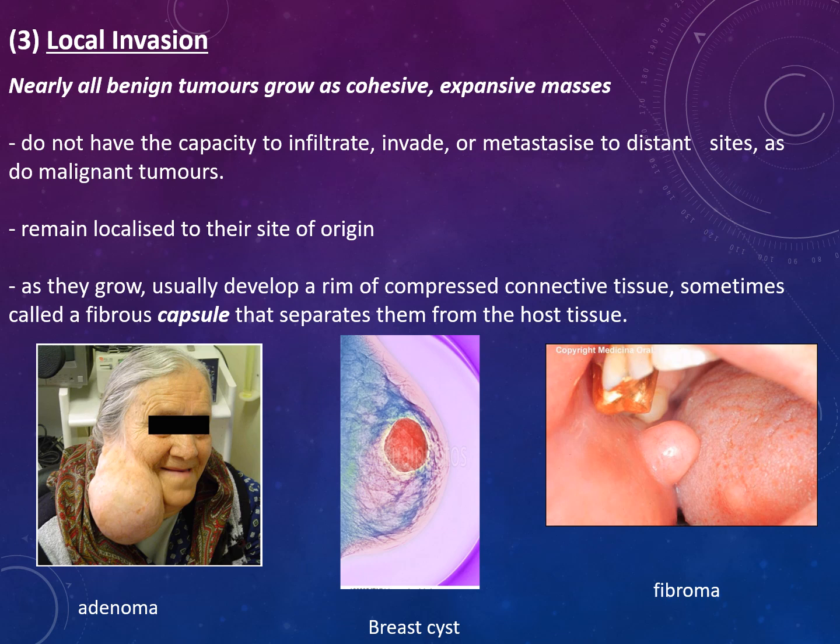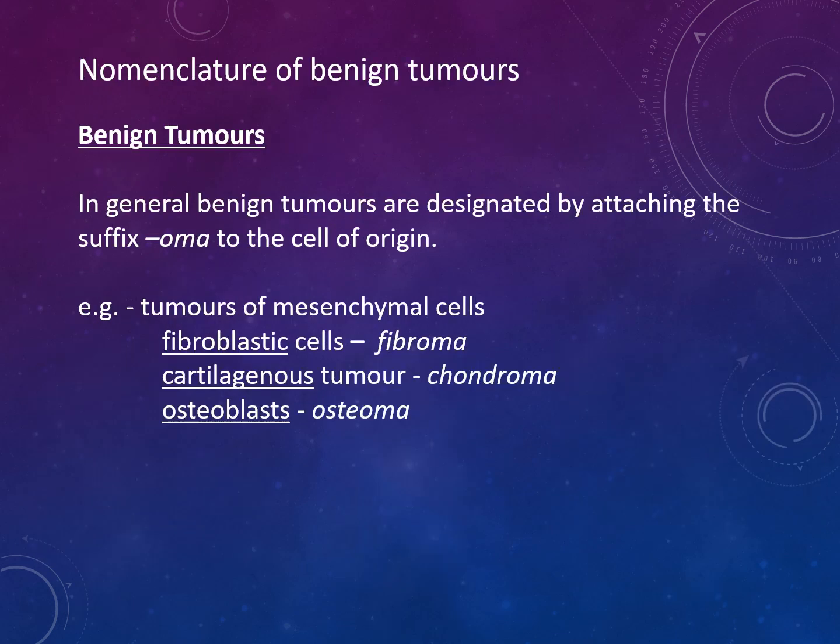Nearly all benign tumours grow as cohesive expansive masses. They cannot infiltrate, invade, or metastasise to distant sites; they remain localised and usually develop a rim of compressed connective tissue — a fibrous capsule — separating them from host tissue. Benign tumours are designated by attaching the suffix '-oma' to the cell of origin; for example, fibroma from fibroblastic cells, chondroma from cartilage, and osteoma from osteoblasts.